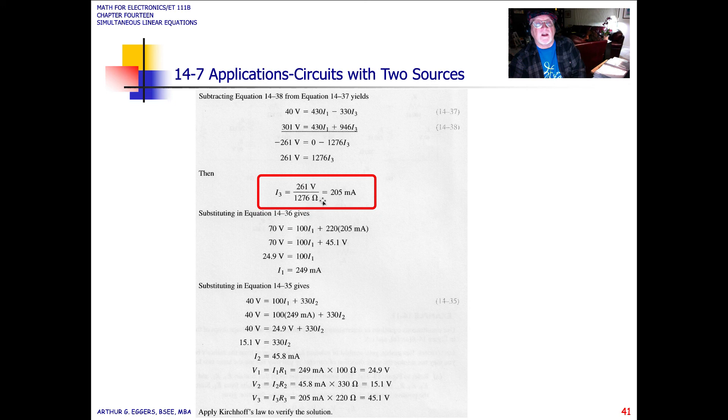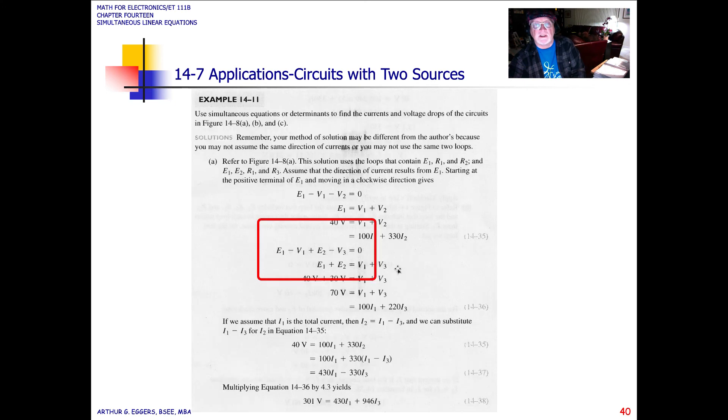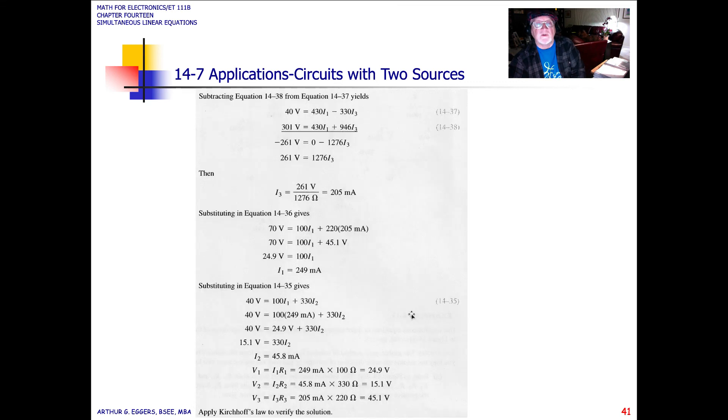So if we take and substitute in equation 36, let's go back here, 36 is 70 volts equals 100 I1 plus 220 I3, and make that substitution for I3, 205 milliamps, we are able to solve for I1 in this case, because that's all that's left, 249 milliamps.